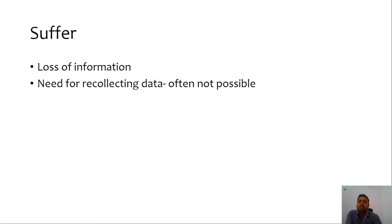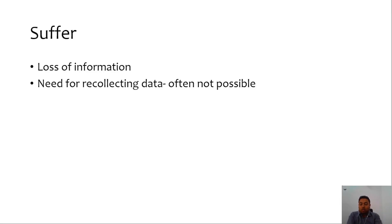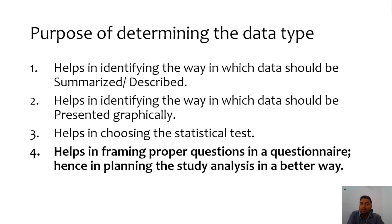The research suffers a loss of information if this information was needed. There then becomes a need for recollecting the data, which is often not possible. The student feels stuck after collecting a whole lot of data when there is not enough information available and cannot go back to recollect it. It therefore becomes very necessary to decide the particular type of data to be collected so that information is correctly acquired. The fourth purpose of determining the data type is that it helps in framing proper questions in a questionnaire, hence planning the study and analysis in a better way.